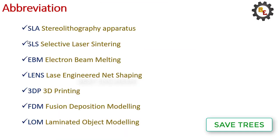Here are the abbreviations: SLA — Stereolithography Apparatus; SLS — Selective Laser Sintering; EBM — Electron Beam Melting; LENS — Laser Engineered Net Shaping; 3DP — 3D Printing; FDM — Fused Deposition Modeling; LOM — Laminated Object Modeling.